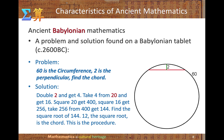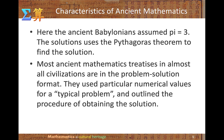We know that more than 4,600 years ago, the Babylonians understood the relationship between diameter and circumference. They also knew Pythagoras' theorem and how to take square roots. Most ancient mathematics treatises in almost all civilizations are in a problem-solution format. They used particular numerical values for typical problems and outlined the procedure of obtaining the solution.